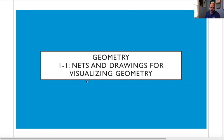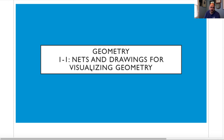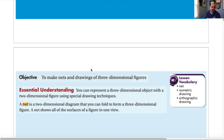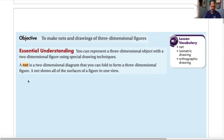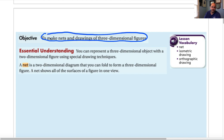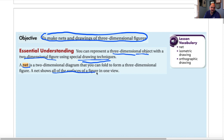All right, this is going to be lesson 1-1 for geometry. It's called Nets and Drawings for Visualizing Geometry. Our objective is to make nets and drawings of 3D figures. The essential understanding is that you can represent a three-dimensional object with a two-dimensional figure using special drawing techniques. A net is a two-dimensional diagram that you can fold to form a three-dimensional figure — a net shows all of the surfaces of a figure in one view.